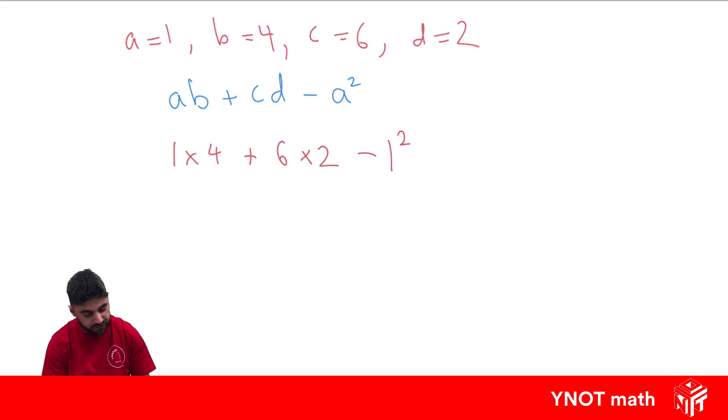So we've made all our substitutions first, and now we just need to use our order of operations to finish off the question. So there's no brackets, but there is an index, so let's do that first. So 1 times 4 plus 6 times 2 minus, 1 squared just means 1 times 1, which is 1. Next we do our multiplication.